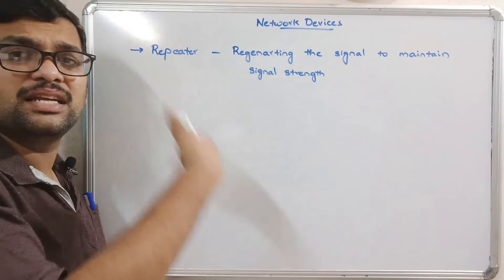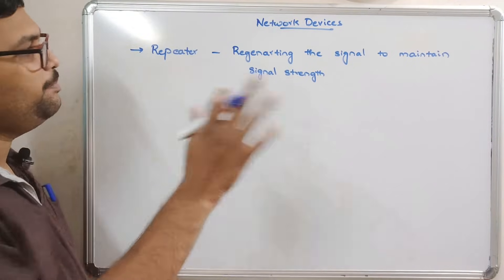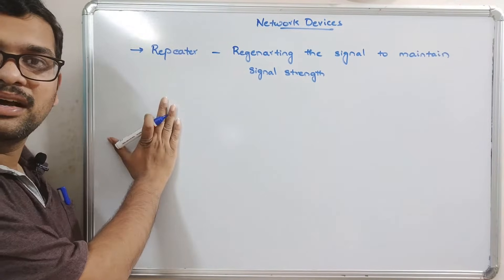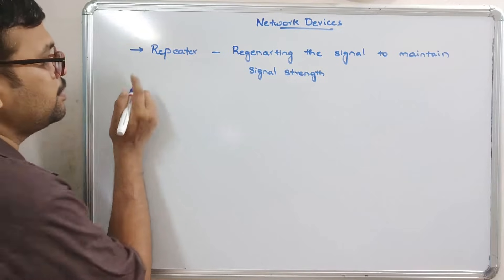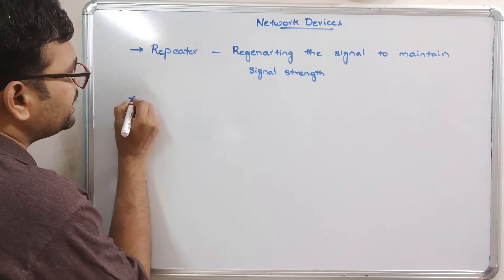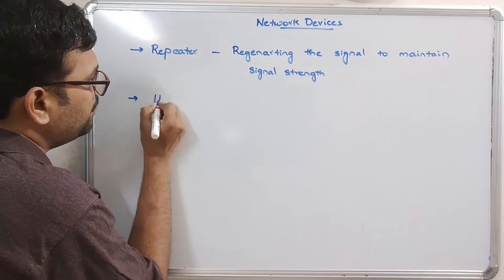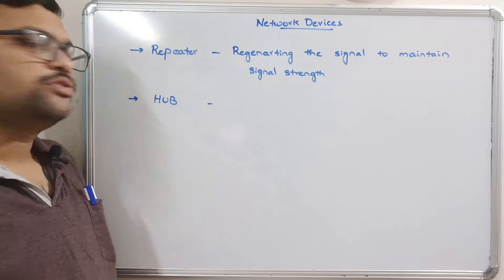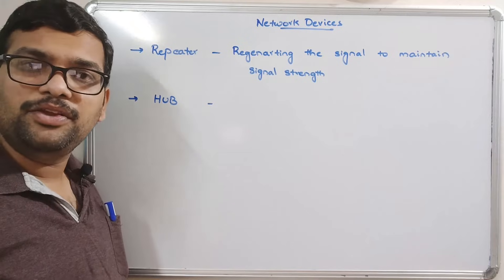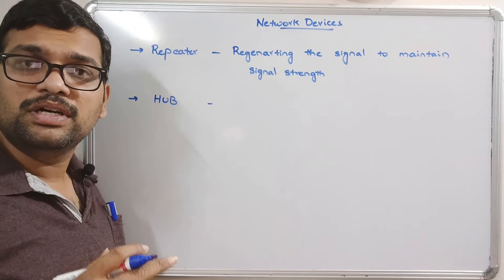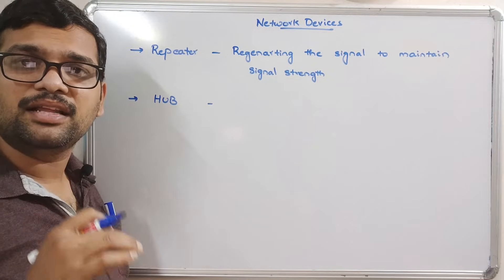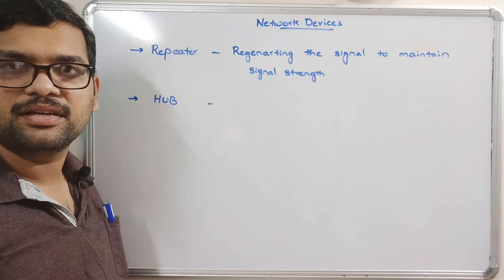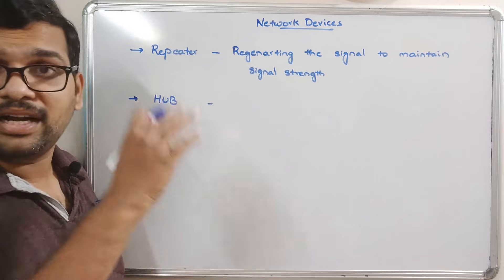Before the signal becomes weak or corrupted, it will be regenerated with the help of the repeater. The next device is the hub. The hub is used to send data packets to all connected devices.